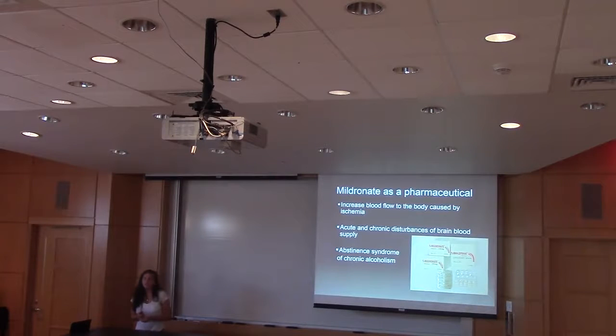So as a pharmaceutical, it increases the blood flow to your body caused by ischemia. And it also has different kinds of roles with acute and chronic disturbances of the blood-brain supply. So that would be if you are a severe stroke patient and you have damage to that supply in your brain. This drug helps keep the oxygen flowing, helps keep the blood going to your brain. That would otherwise cause a lot of brain injuries and detrimental effects without that oxygen to your brain. And it also, interestingly enough, helps with the abstinence syndrome of chronic alcoholism. So that's basically the withdrawal symptoms that you would have if you are stopping drinking if you are an alcoholic. These help keep the person from relapsing from those really bad withdrawal symptoms and help them to move forward in that process of stopping their addiction.